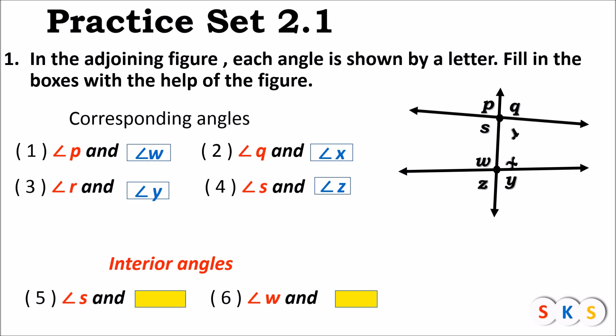Look at this figure. Angle R and angle X is the next pair of interior angles. Interior angles are the angles which are inside the parallel lines, and they also lie on the same side of a transversal. S and W is one pair of interior angles on one side of the transversal.